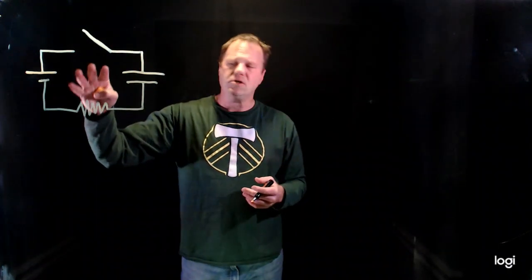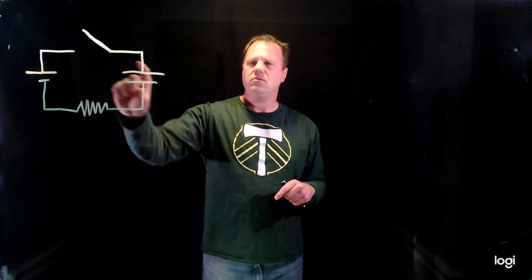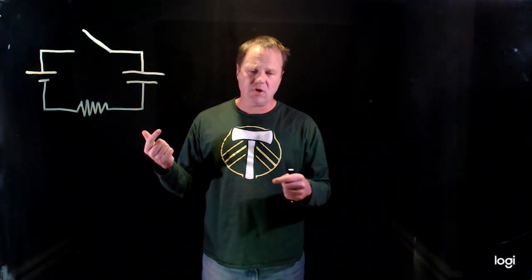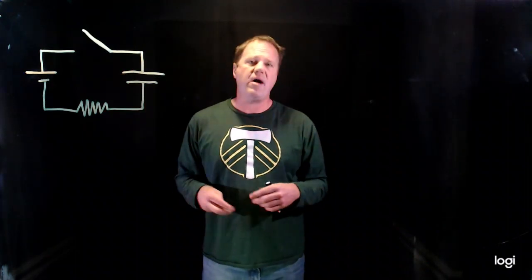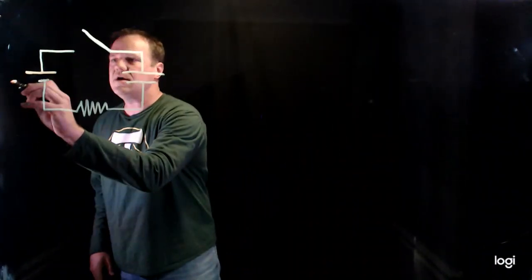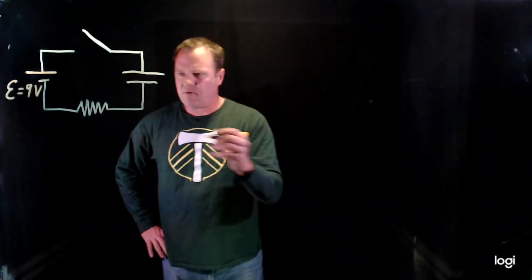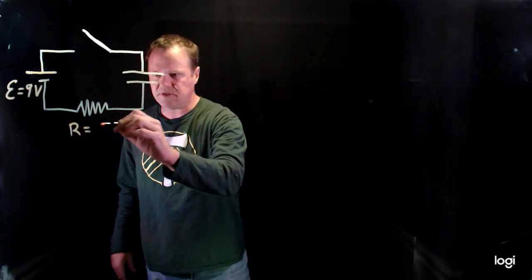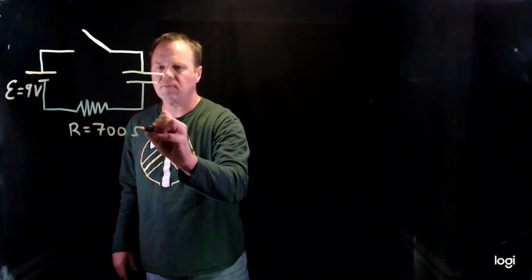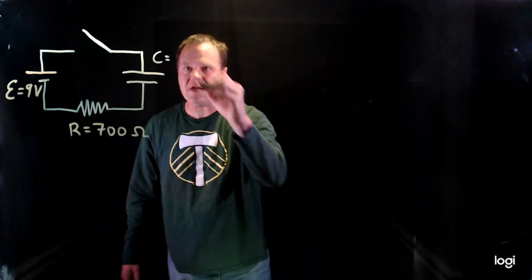We're going to close this switch and then make predictions about lots of different physical quantities. We're going to predict the voltage across each circuit element, the current through the circuit, and the charge on the capacitor — four different physical quantities. The battery EMF is 9 volts, the resistor has a resistance of 700 ohms, and the capacitor has a capacitance of 3 millifarads.